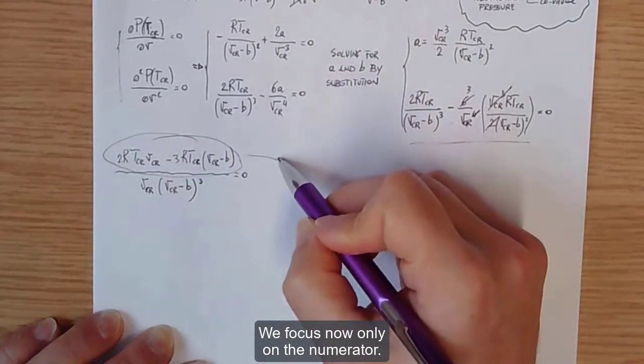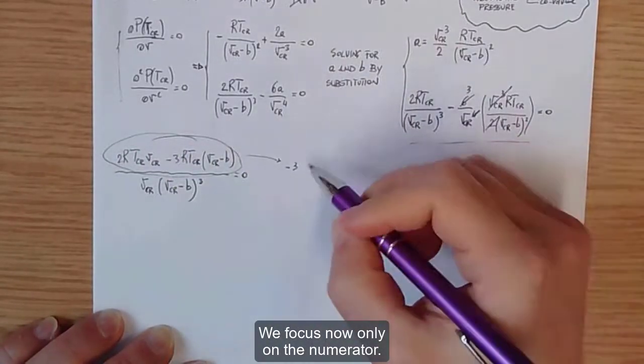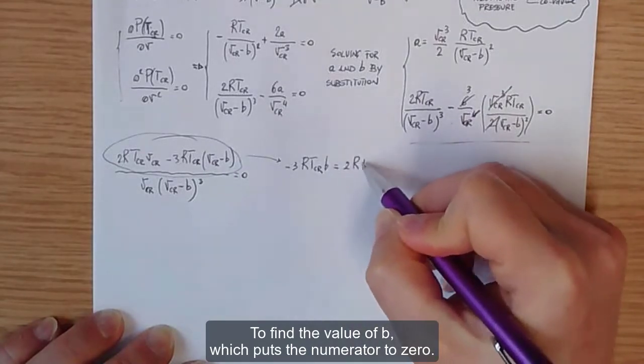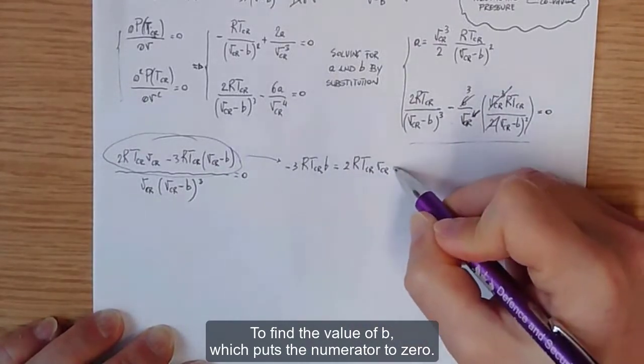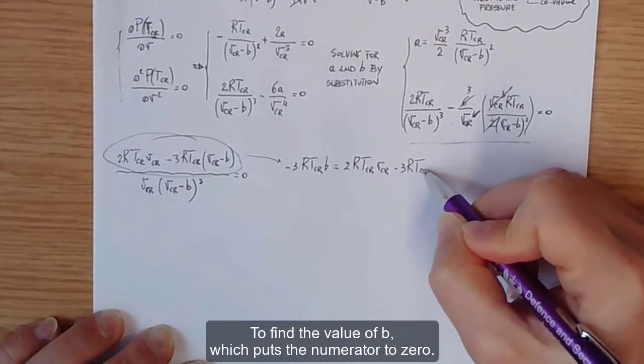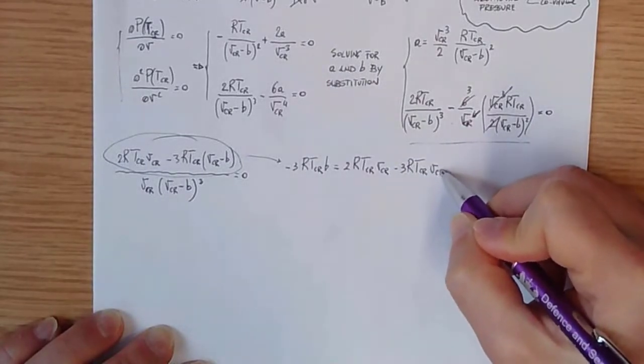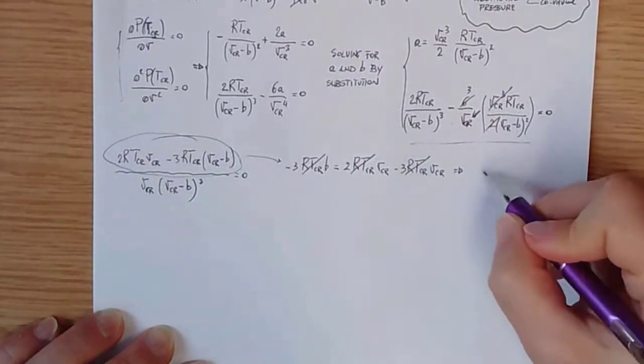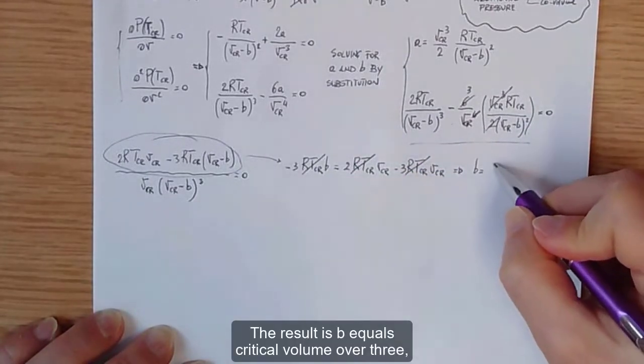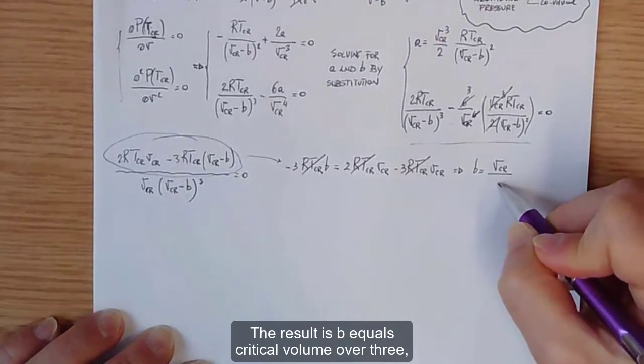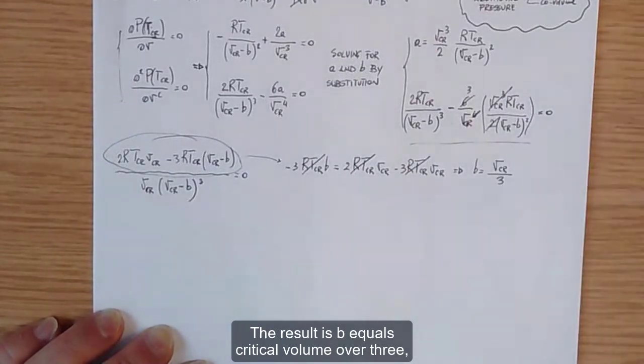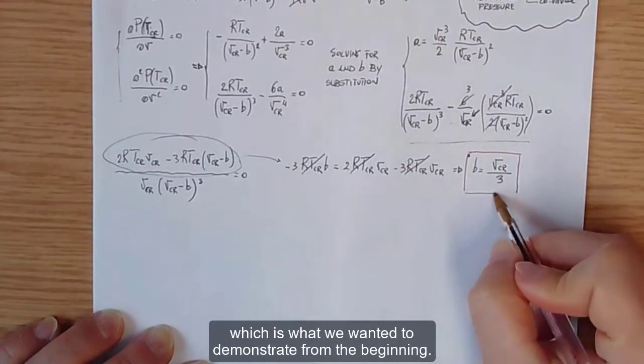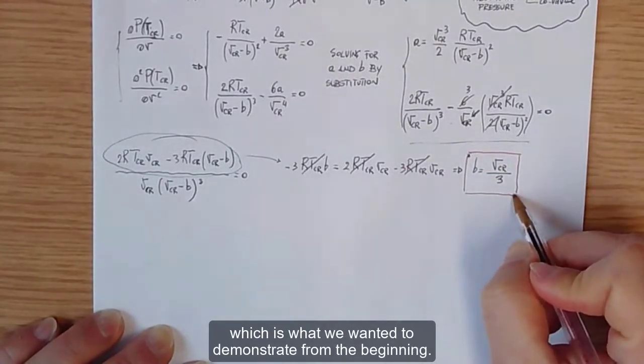We focus now only on the numerator to find the value of b, which puts the numerator to zero. The result is b equals critical volume over 3, which is what we wanted to demonstrate from the beginning.